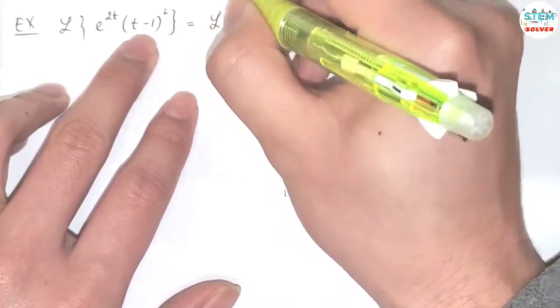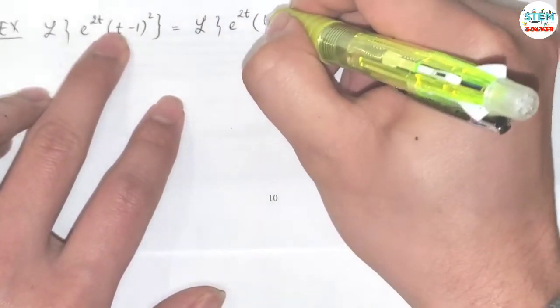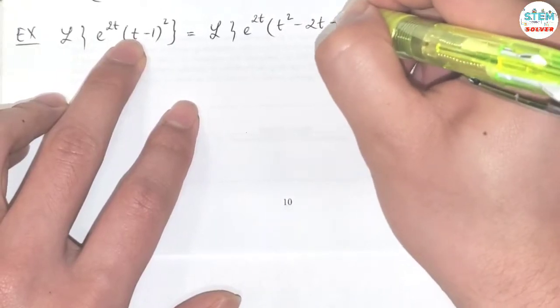So I'm going to multiply this out first. Multiply this out, I have e to the 2t times t squared minus 2t plus 1.